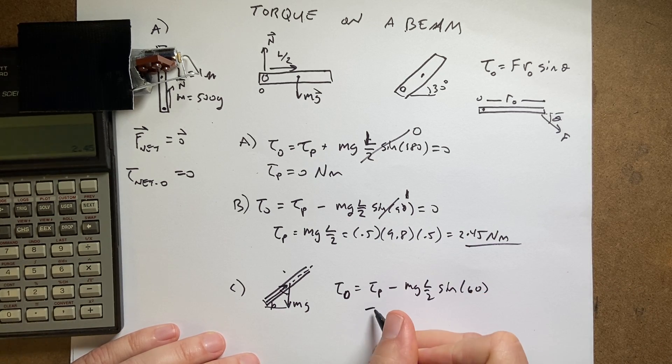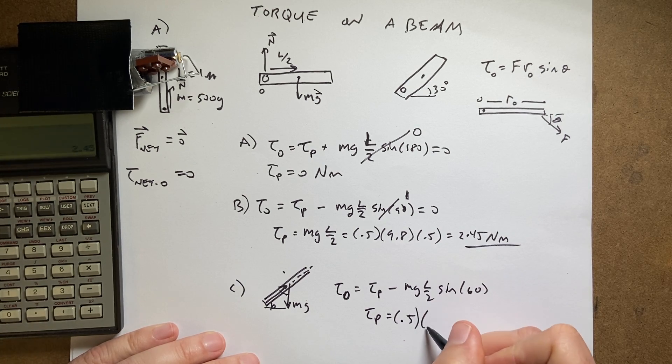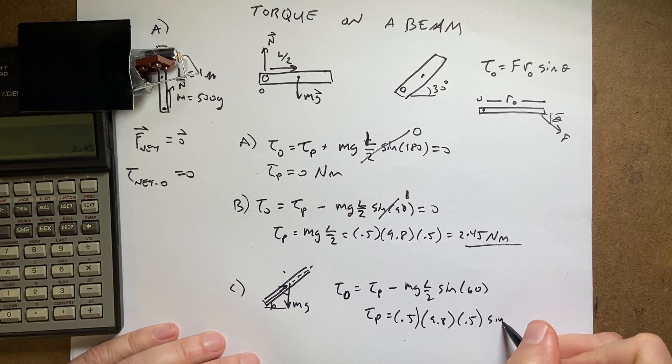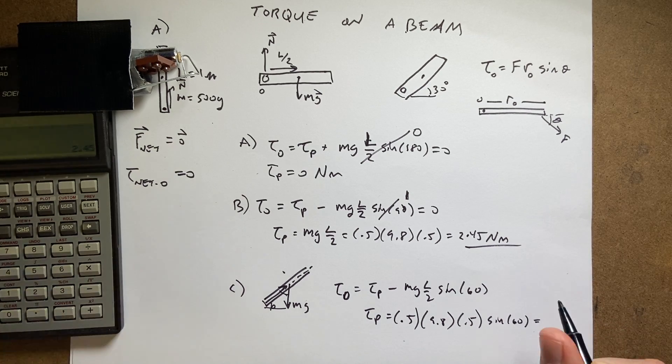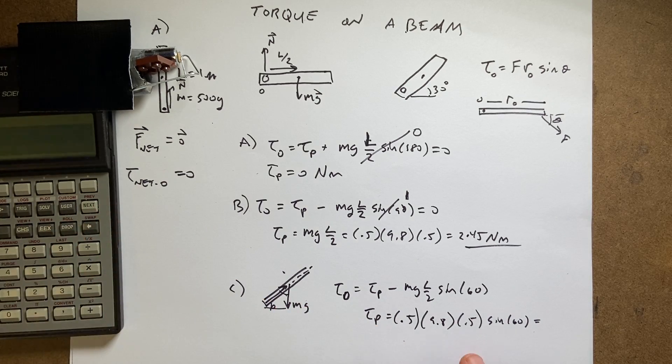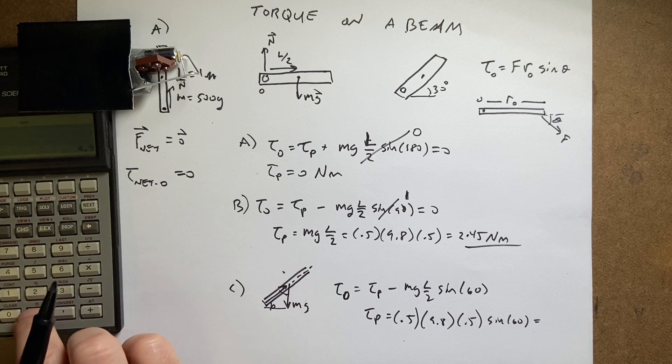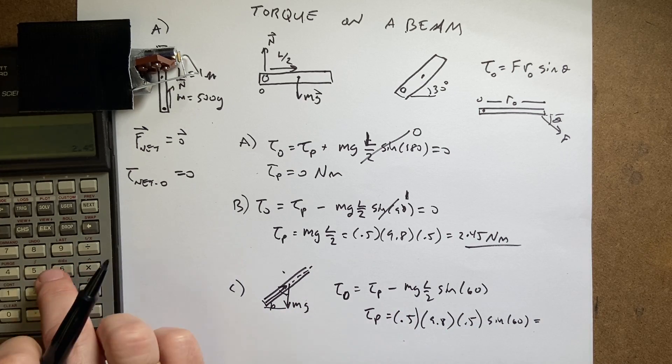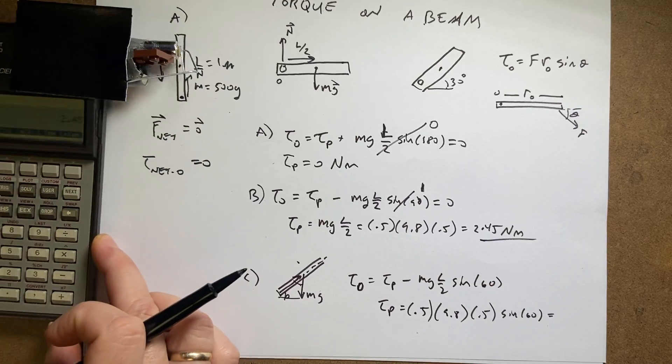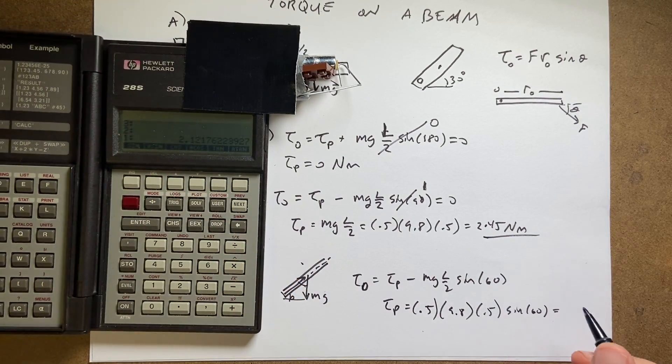So τ_p is going to be m, 0.5, g, 9.8, L over 2, 0.5, sine of 60. And then I get 0.5 enter, 9.8 times 0.5 times, and then 60 trig... oh, you can't see my calculator.